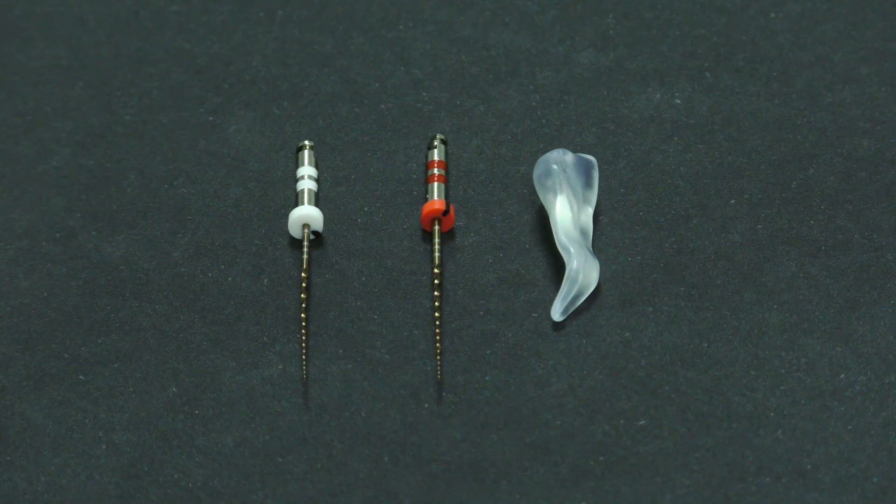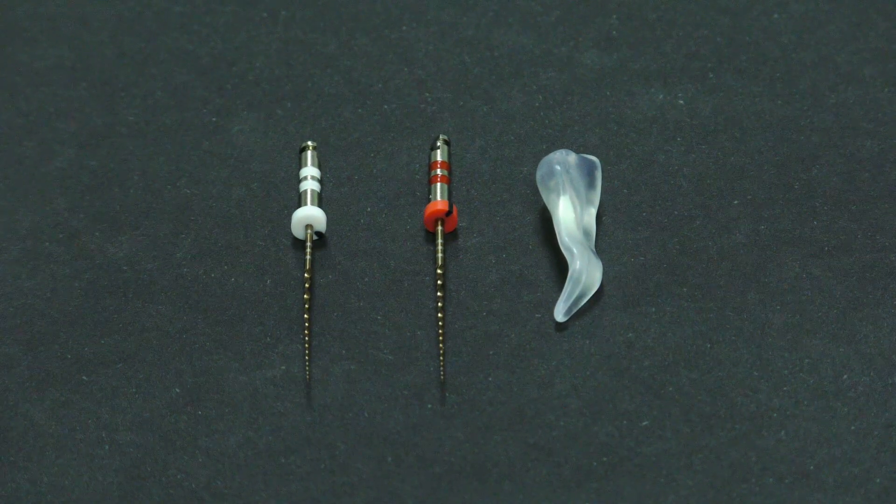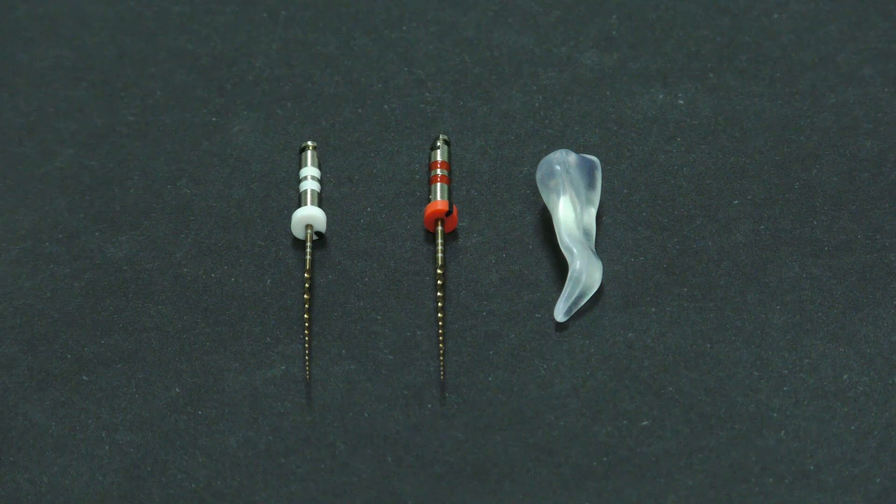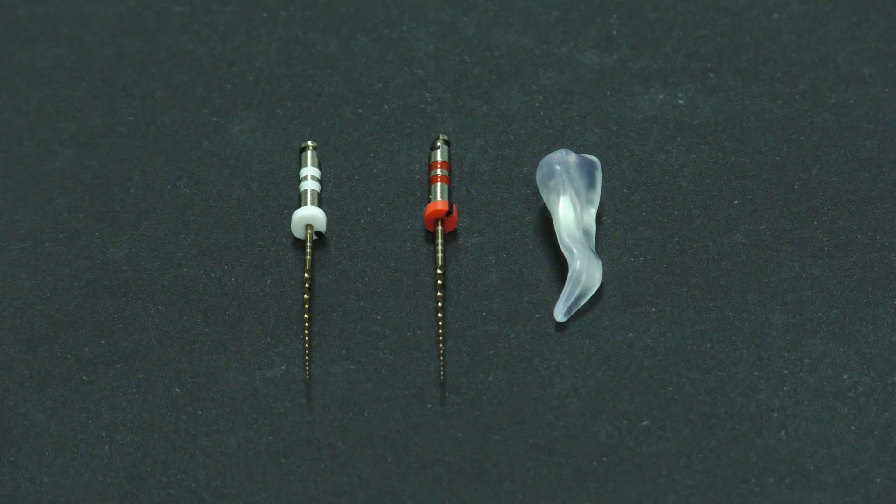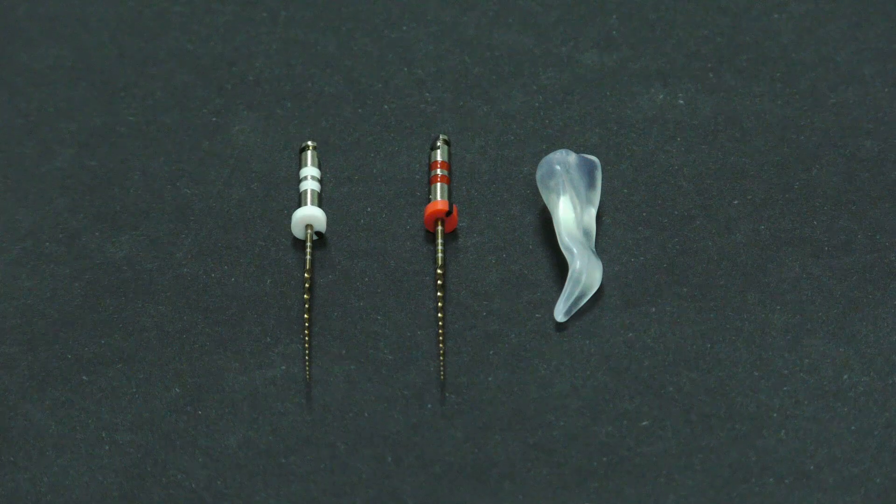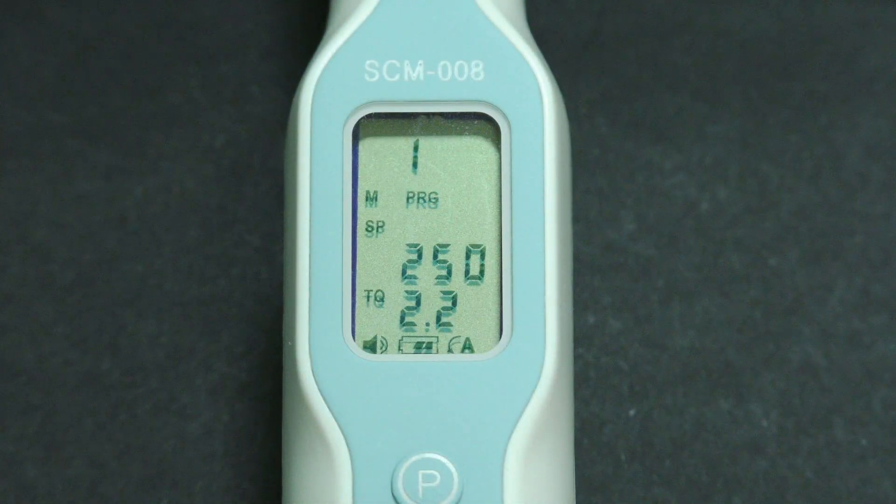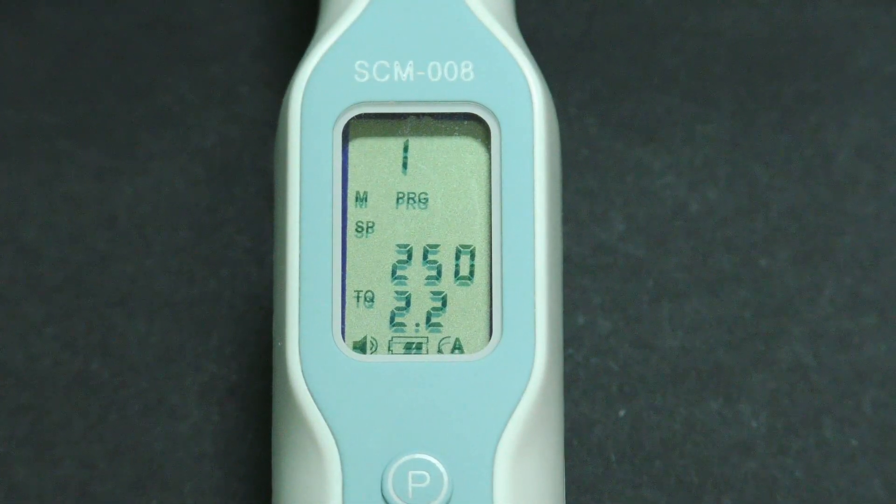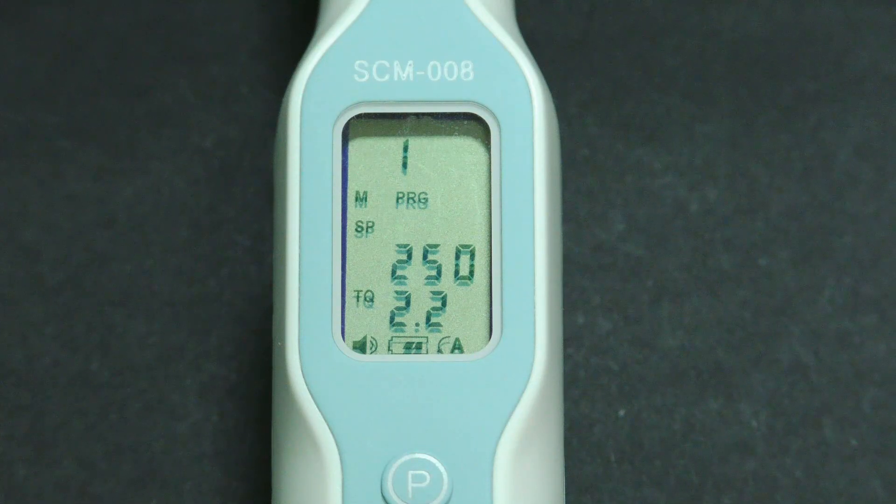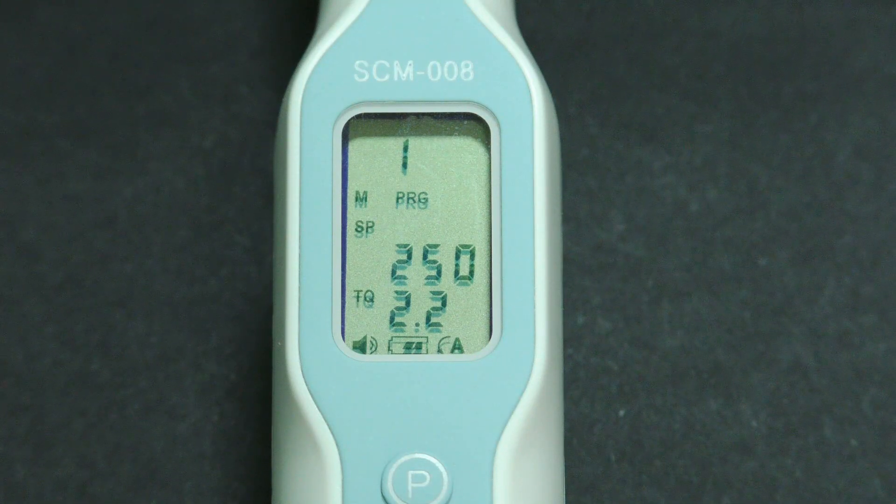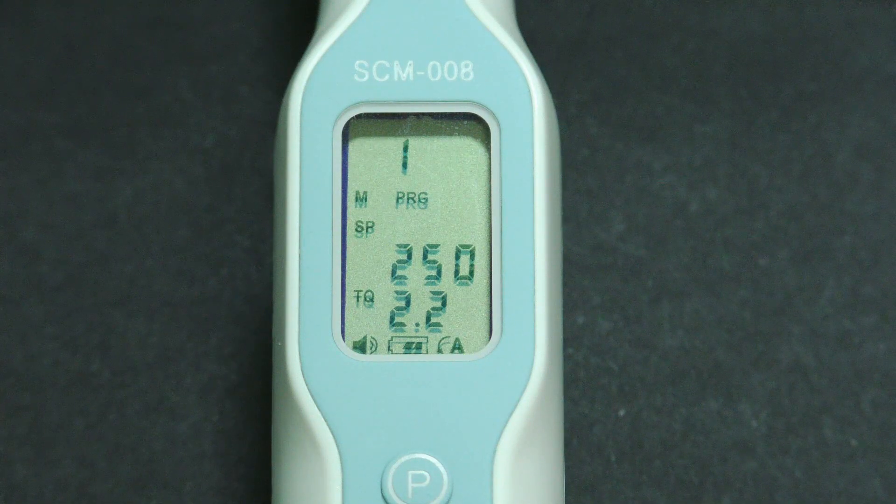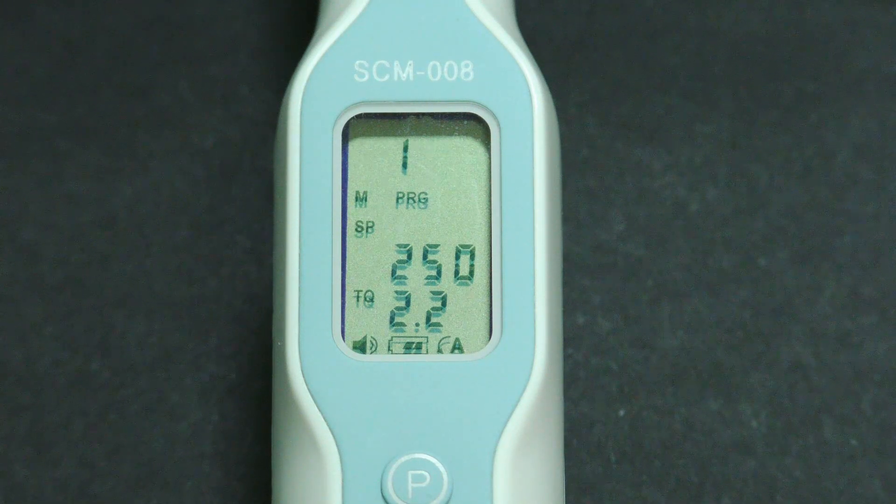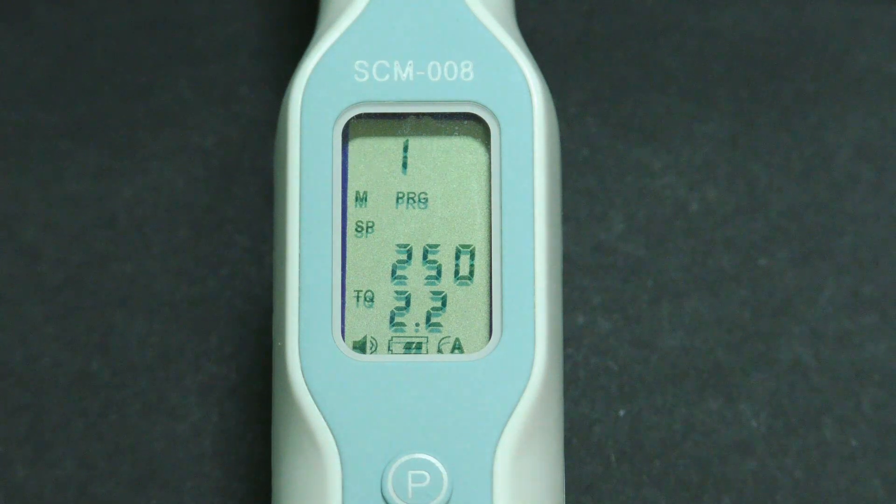Now we are going to show you how to make machine glidepath with files 13-04 and 17-04 in S-curved root canal of 3D printed premolar. As with all VS Flexi files, file size 13-04 is also used at 250 rpm with torque of 2.2 newton per centimeter with normal 360 degree rotation.